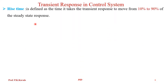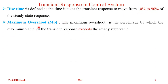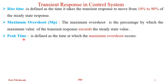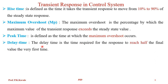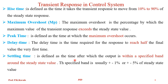Rise time is defined as the time it takes for the transient response to move from 10% to 90% of the steady state response. Maximum overshoot is the percentage by which the maximum value of the transient response exceeds the steady state value. Peak value is defined as the time at which maximum overshoot occurs. Delay time is the time required for the response to reach half of its final value. Settling time is defined as the time after which output is within a specified tolerance band.